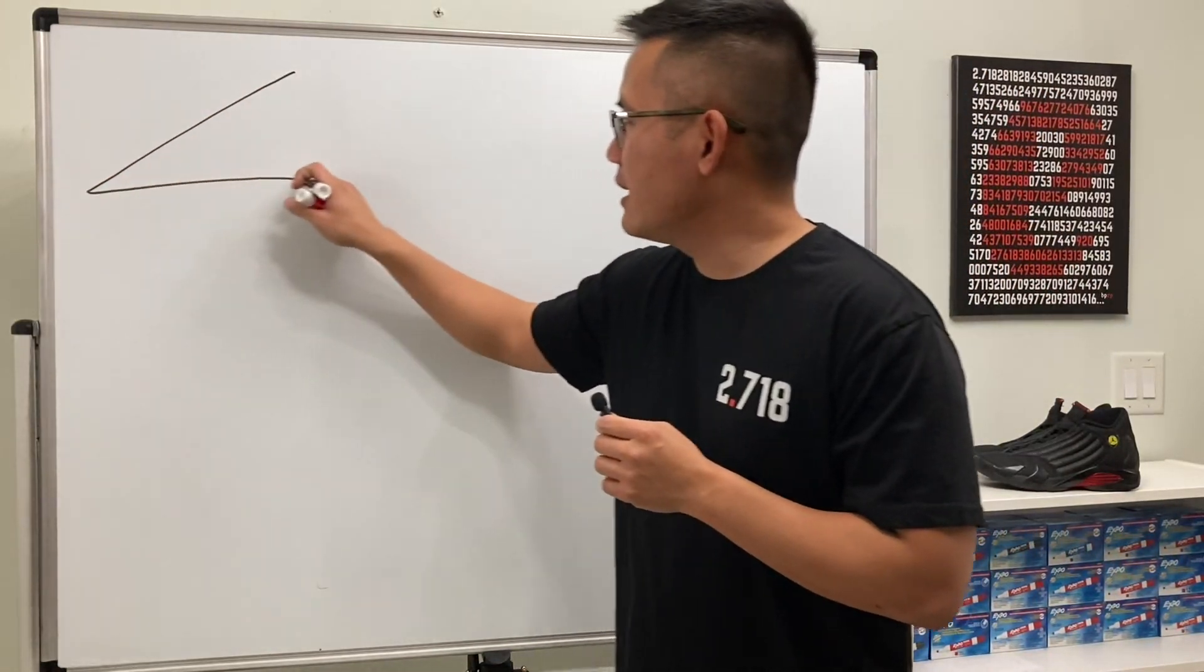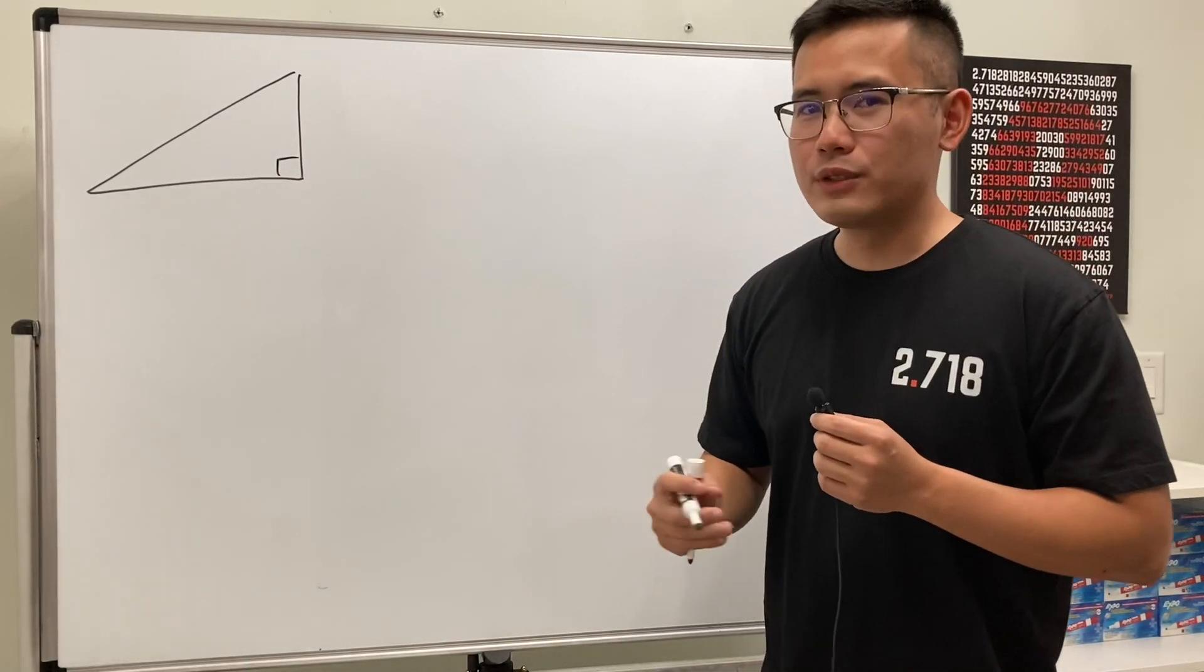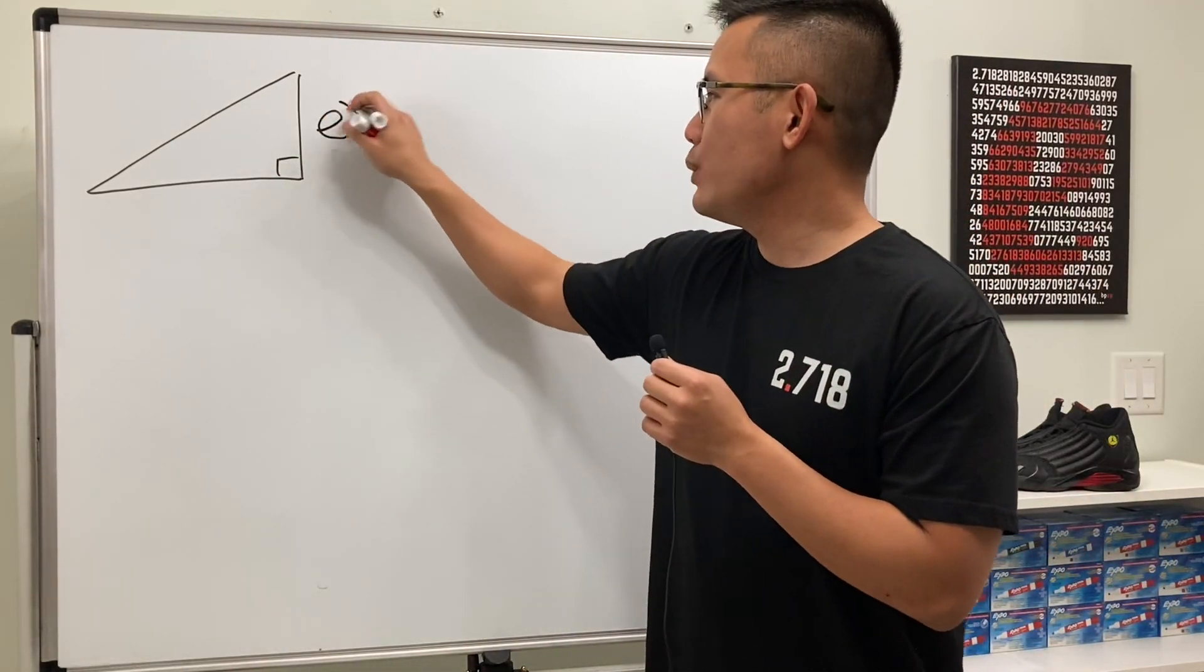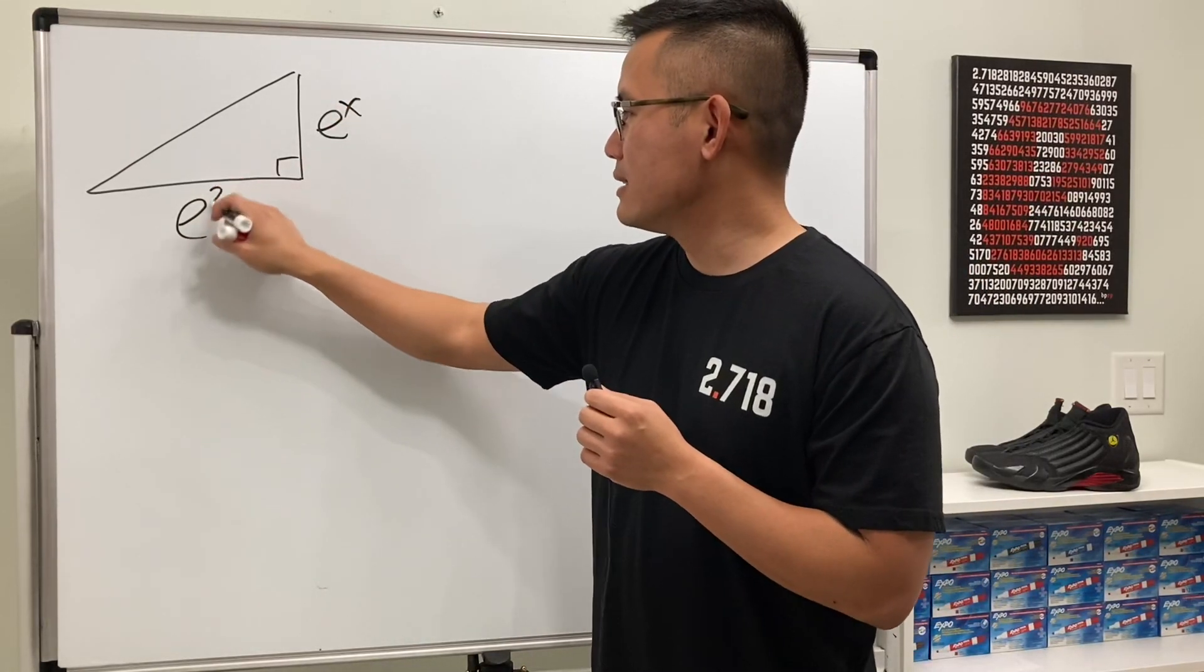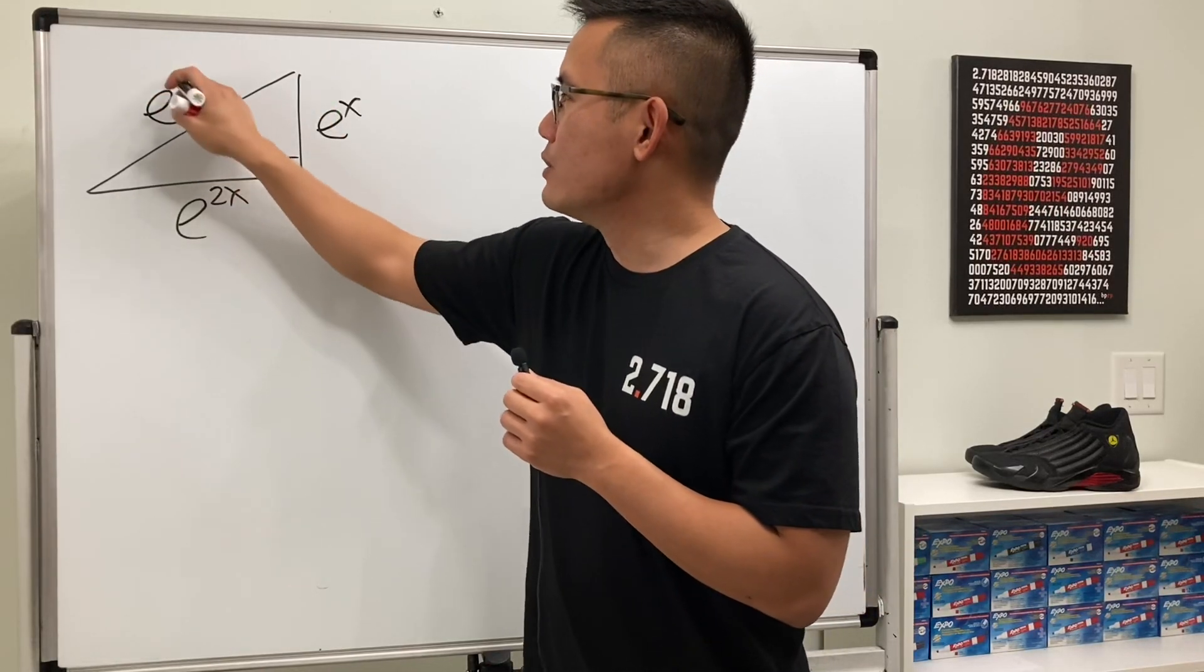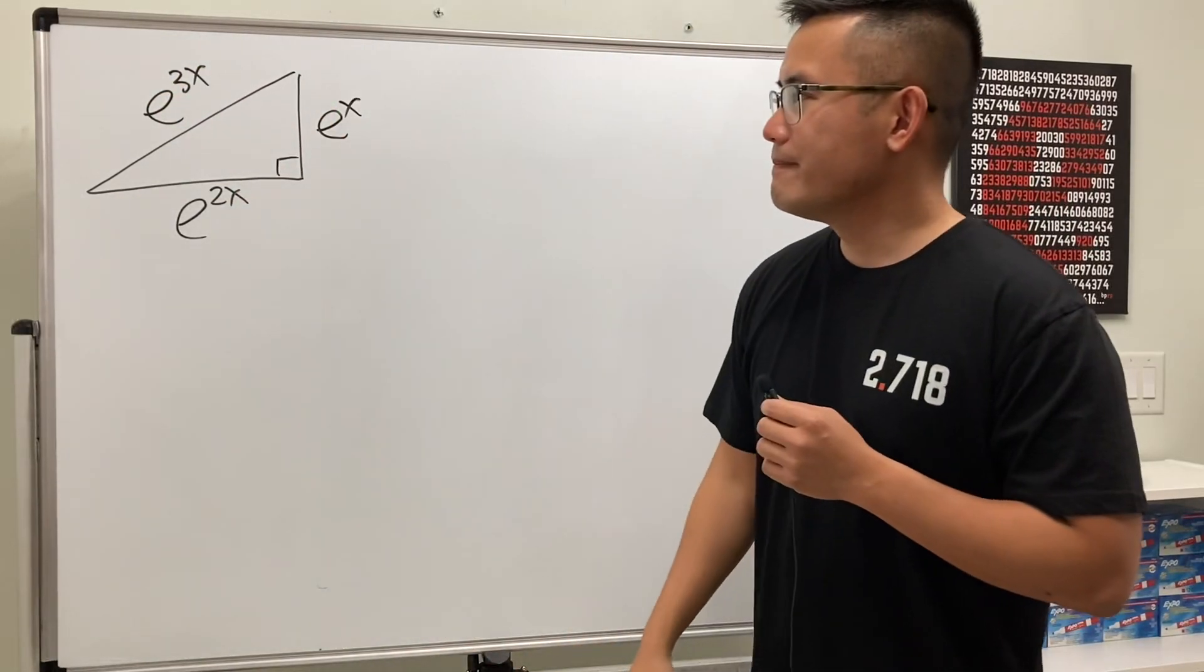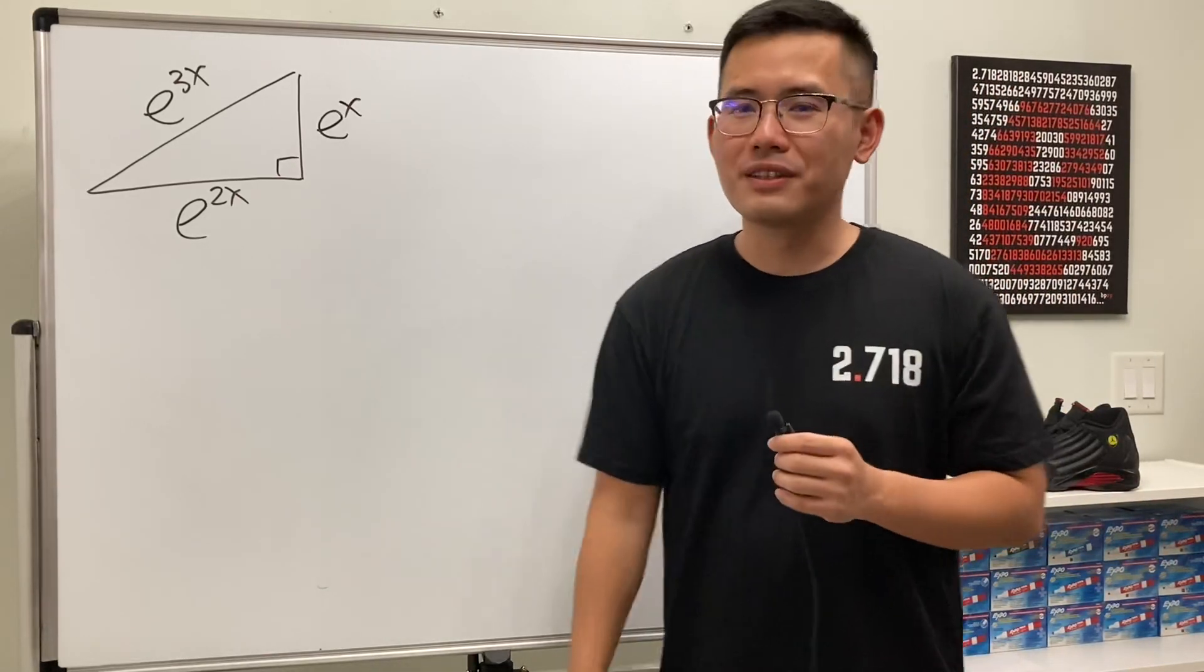I'm going to just look at this right triangle and I was wondering if it's possible for us to find an x value so that here we have e to the x, and then here we have a little bit longer, so let's make this e to the 2x, and let's make this even longer, so e to the 3x. Is it possible?